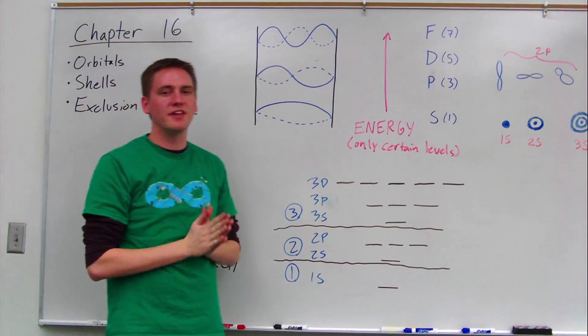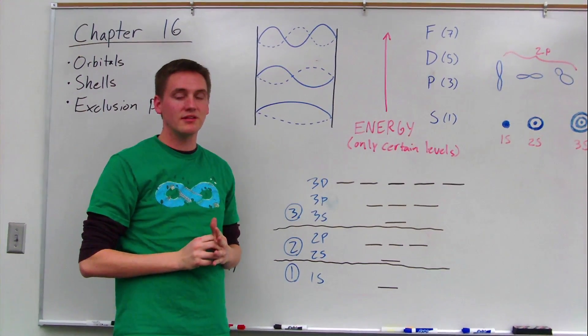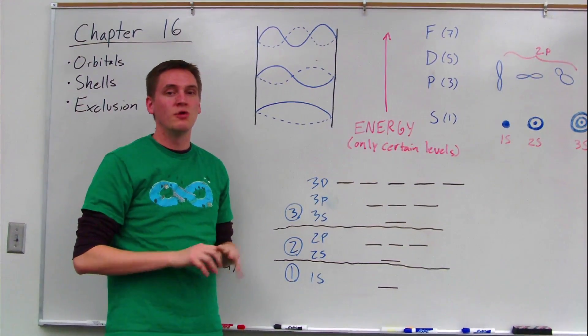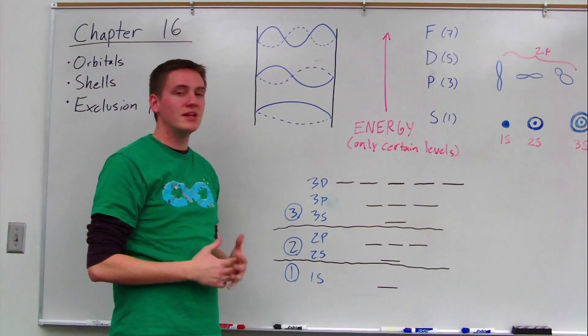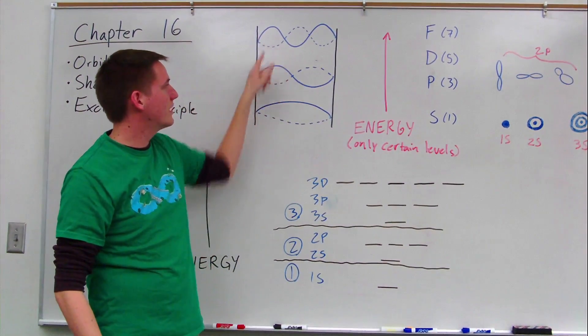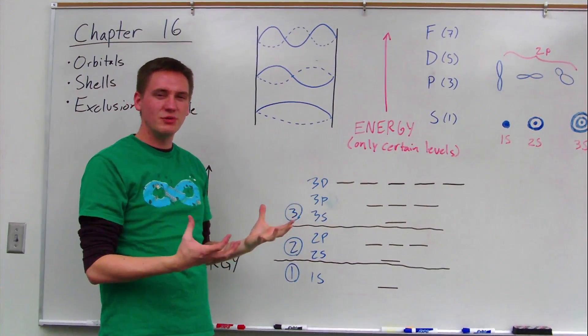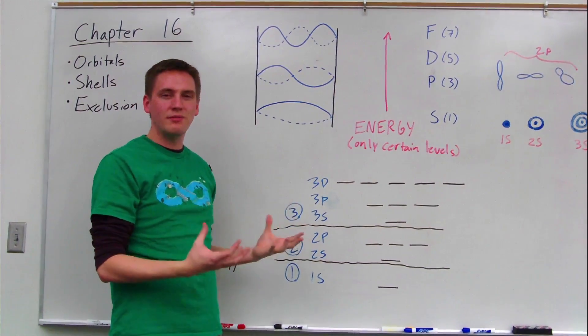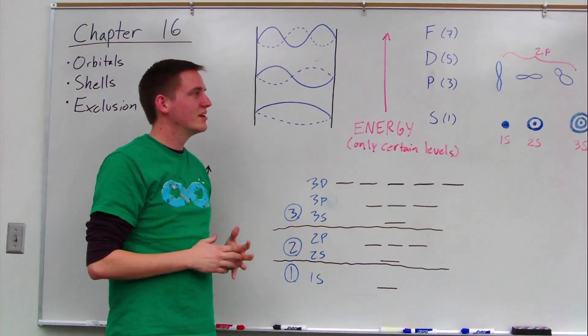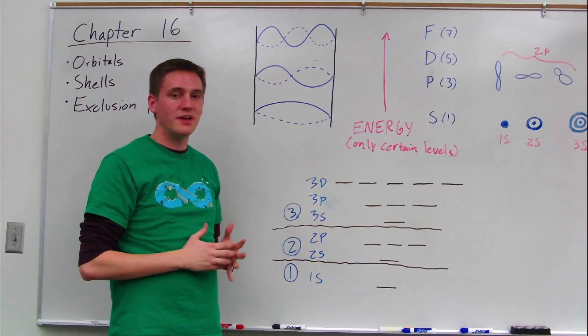So basically, instead of thinking about orbits, like we talked about with the Bohr model, we're going to talk about electrons and orbitals, which are three-dimensional standing waves. So we take standing waves, make it into a 3D pattern, and that will give us a probability cloud of where an electron is most likely to be found.